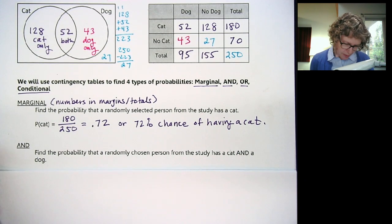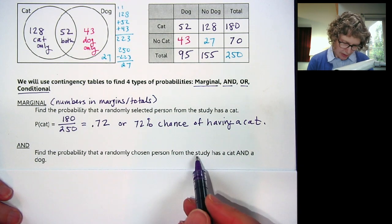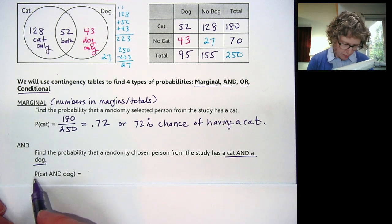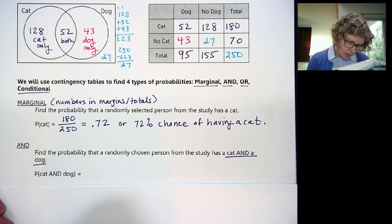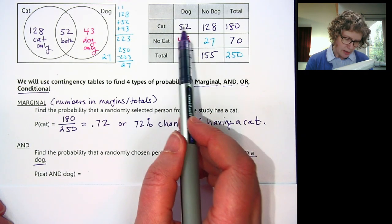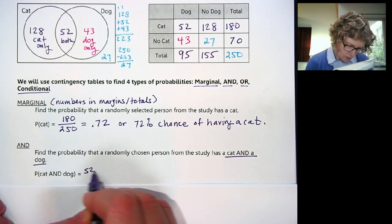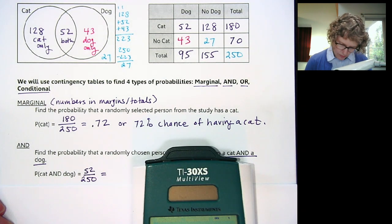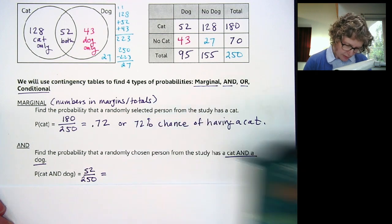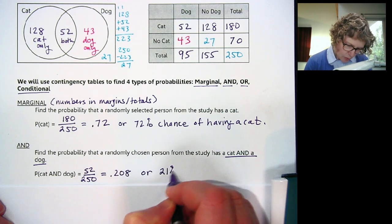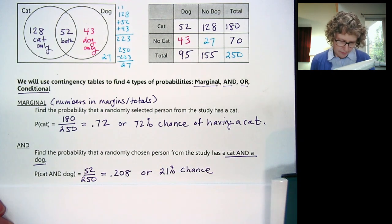Now we want to find an AND probability: find the probability that a randomly chosen person from the study has a cat and a dog. We find the cell in the table where cat and dog intersect, which is 52 out of 250. 52 divided by 250 is 0.208, or about a 21% chance of having a cat and a dog.